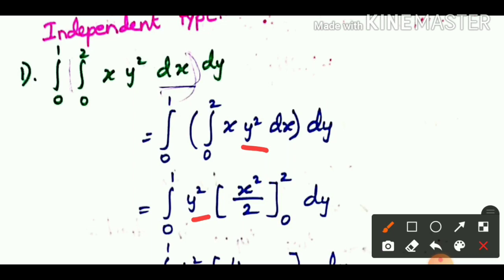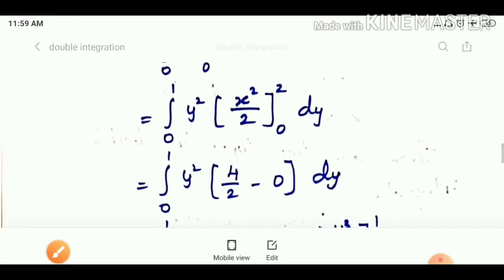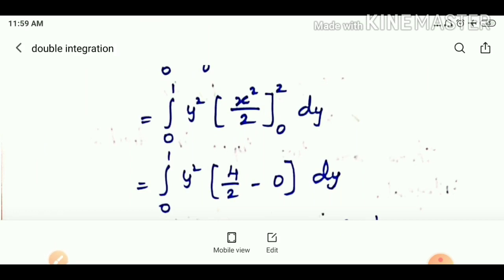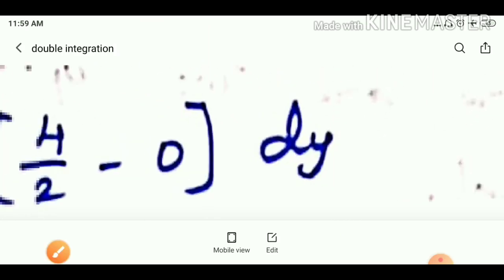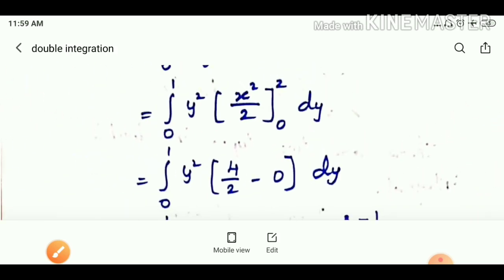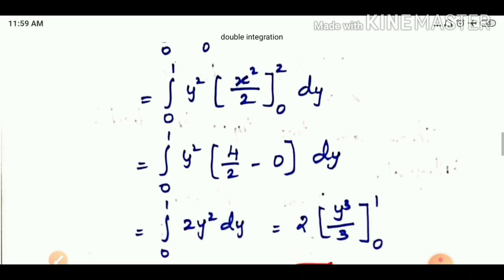We apply the limit 0 to 2. Substituting the upper limit minus the lower limit: the upper limit gives 4 by 2, and the lower limit gives 0. So we get 4 by 2 minus 0, which simplifies. Now we substitute and simplify to continue integrating with respect to y.